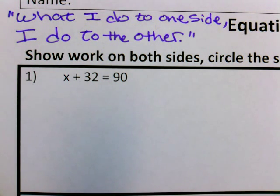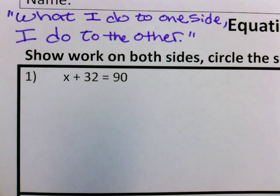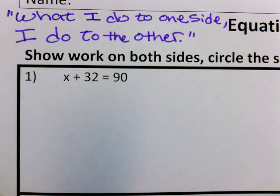In order to solve any type of algebraic equation, we do need to remember this one saying that I have written up top: what I do to one side, I have to do to the other. It's going to be super important. It's just like with equivalent fractions, where you say what I do to the top, I have to do to the bottom. In algebra, what I do to one side, I have to do to the other.